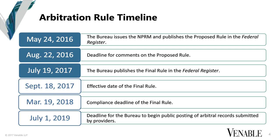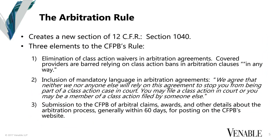The arbitration rule looks very similar to what you saw in the proposal — there were some changes on the margins, really just cleaning up language and focusing in on the Bureau's core focus of the rule, which is eliminating class action waivers in arbitration agreements. That core elimination is still there. You are barred from relying on class action waivers in arbitration agreements entered into after the compliance deadline, which will be March 19, 2018. The second element is mandatory language — a disclosure that will need to be included in arbitration agreements after the compliance deadline. There are alternative disclosures to address certain alternative issues included in the rule.